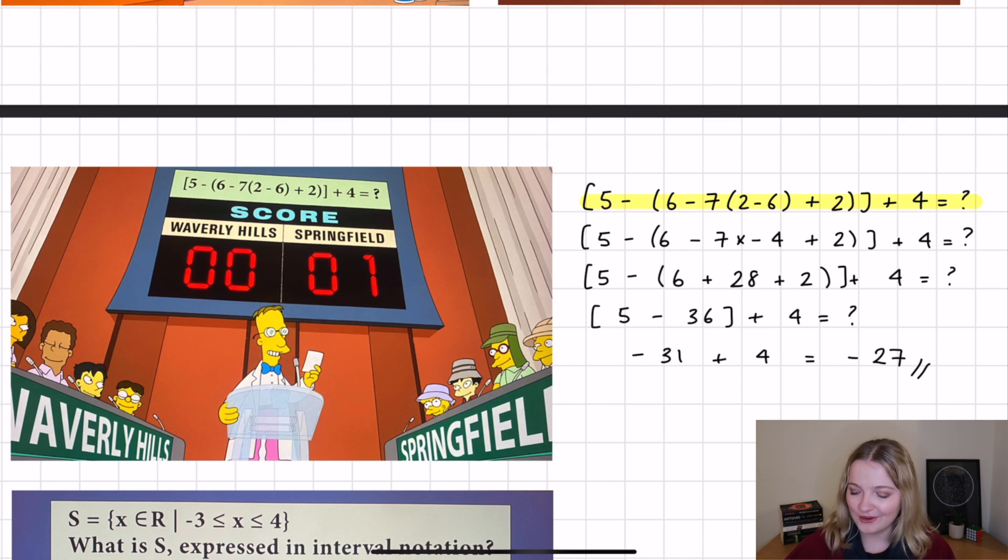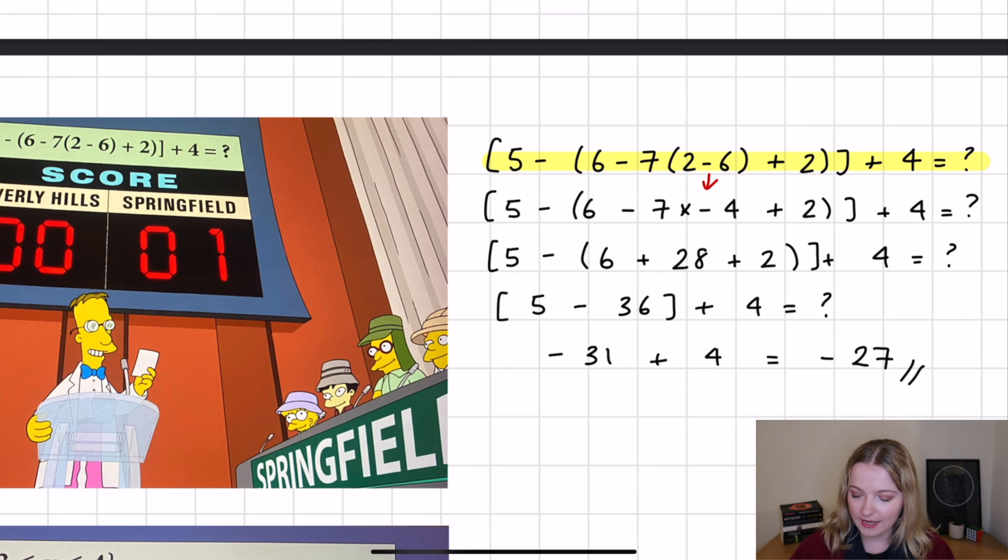So the first thing that I did, again, remembering BODMAS, BIDMAS, whatever it is that you like to call it, expanded out the brackets. So we had two minus six is minus four here. That was all I did in the first line. The next line, I performed that multiplication. So we got minus seven multiplied by minus four, which is plus 28. So that's where we got the plus 28 there from. And then I added in the brackets as well. So added six plus 28 plus two, which gives us 36. And then all you do is five minus 36 plus four. And we get the answer that is minus 27, which is what is seen in the episode itself. So quite a nice, easy one there.